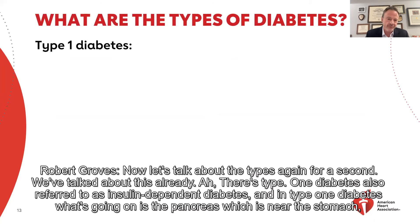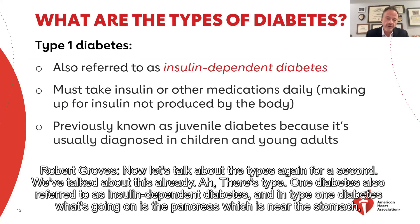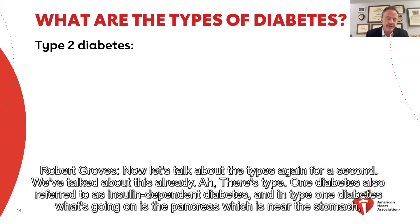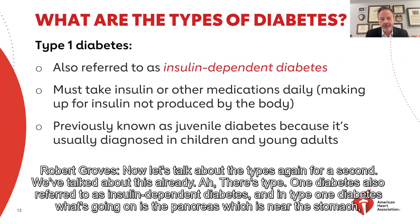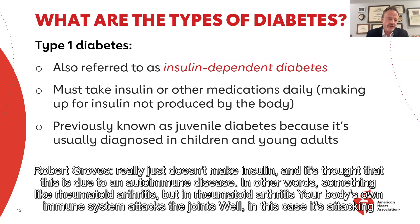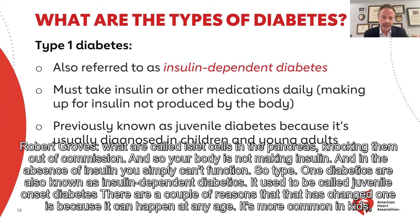Let's talk about the types again. There's type 1 diabetes, also referred to as insulin-dependent diabetes. In type 1 diabetes, the pancreas — which is near the stomach — really just doesn't make insulin. It's thought that this is due to an autoimmune disease, similar to rheumatoid arthritis, where your body's own immune system attacks the joints. In this case, it's attacking what are called islet cells in the pancreas, knocking them out of commission, so your body's not making insulin. In the absence of insulin, you simply can't function.